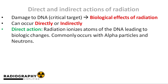Damage to the DNA or critical target can occur directly or indirectly. In direct action, the radiation interacts directly with the atoms of the DNA to produce the biologic changes. While this can theoretically occur with all forms of radiation, it is more likely to occur with particulate radiation such as alpha particles and neutrons. This is because particulate radiation has a great charge, and this permits efficient transfer of energy to the critical target.